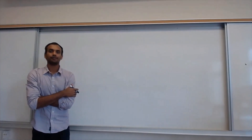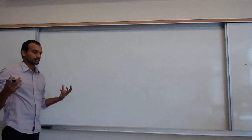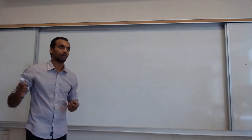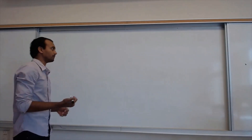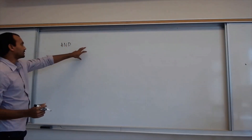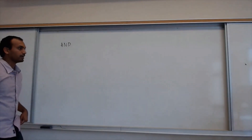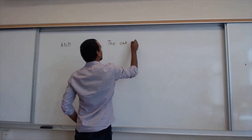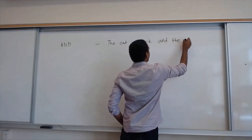Now that we've seen the definition of a proposition and some examples, let's look at some connectives which connect two propositions together. In English, it is common to use several connectives to form compound sentences. For example, you have a sentence and another sentence and you can connect both of them. So you can say: 'the cat is black and the cat likes tuna.'